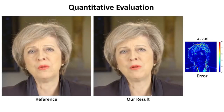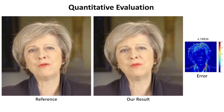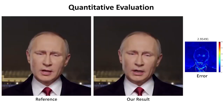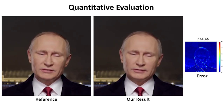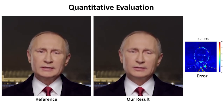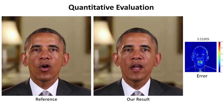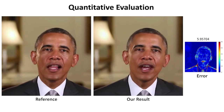We evaluate our approach quantitatively in a self-reenactment setting, in which the source and target videos are taken from different parts of the same video. The error map shows the per-pixel root-mean-squared error in RGB color space with respect to the reference. Our results are nearly indistinguishable from the real video.